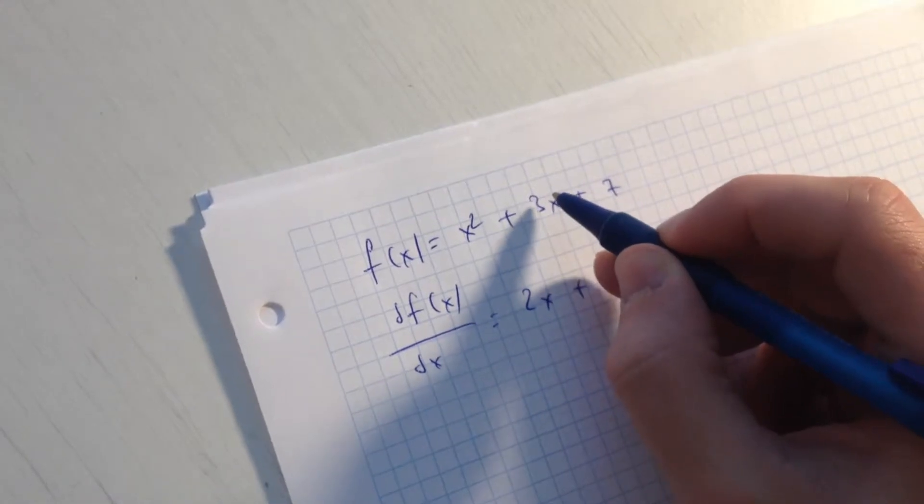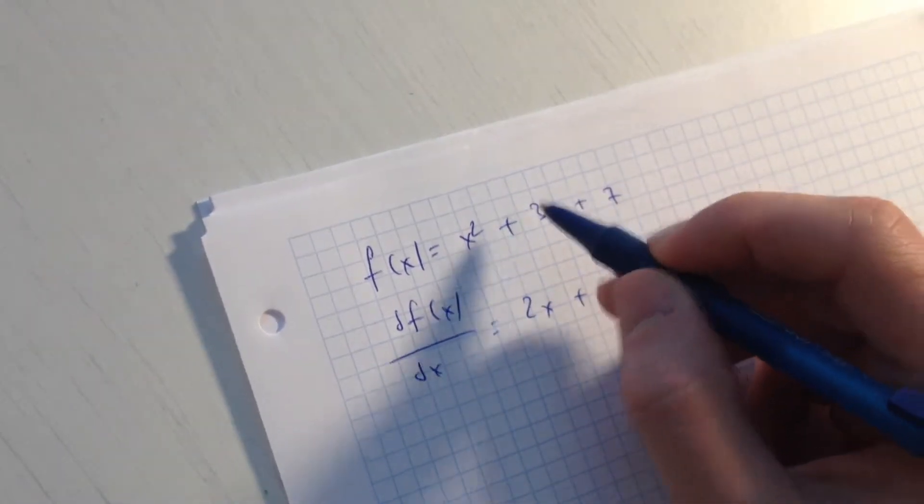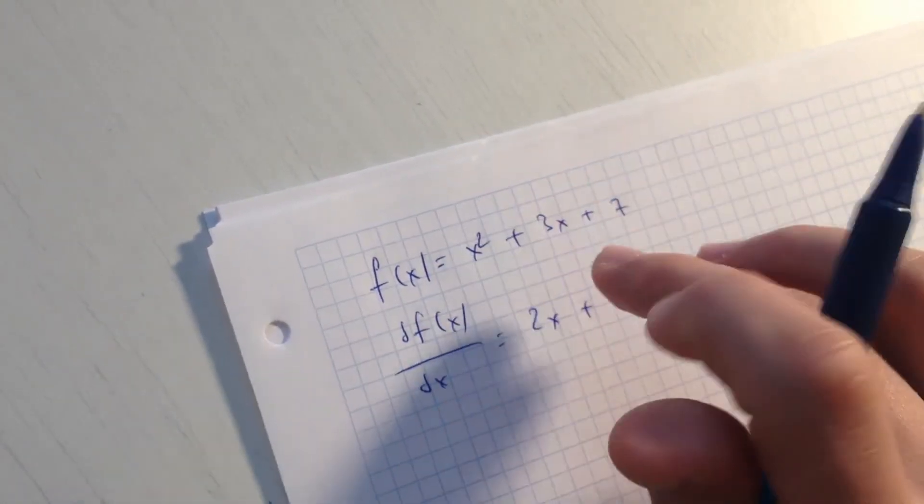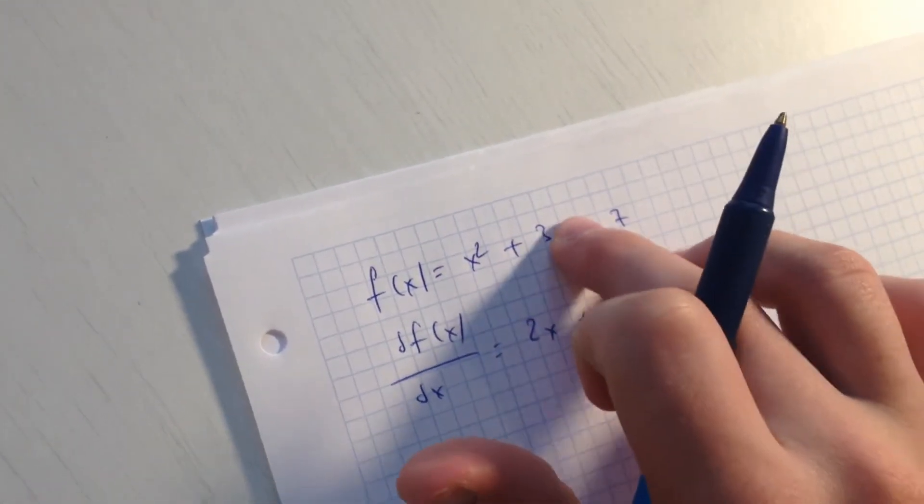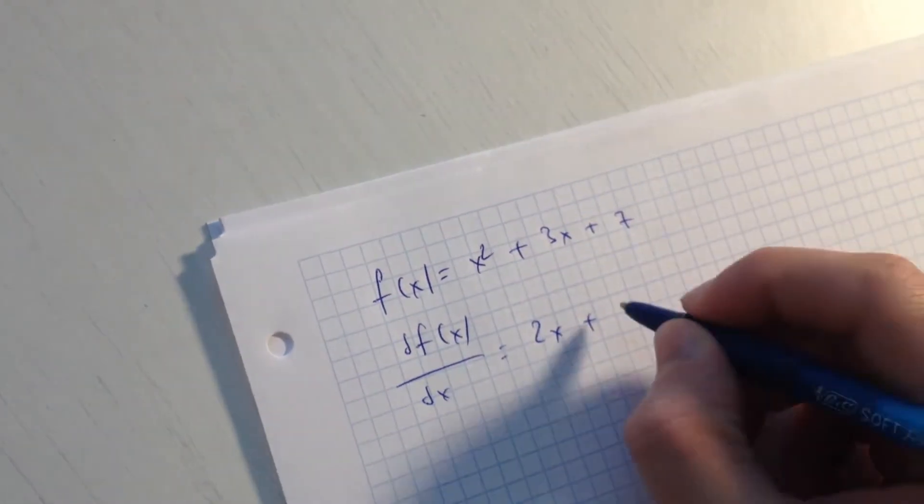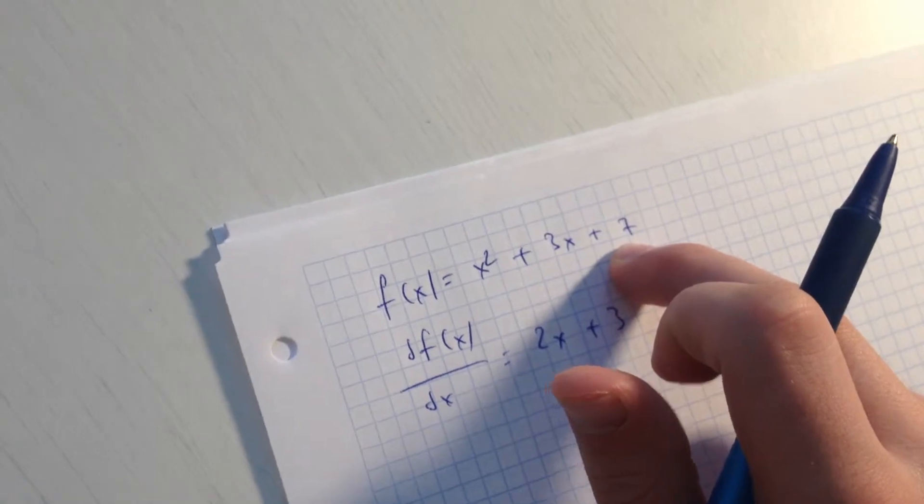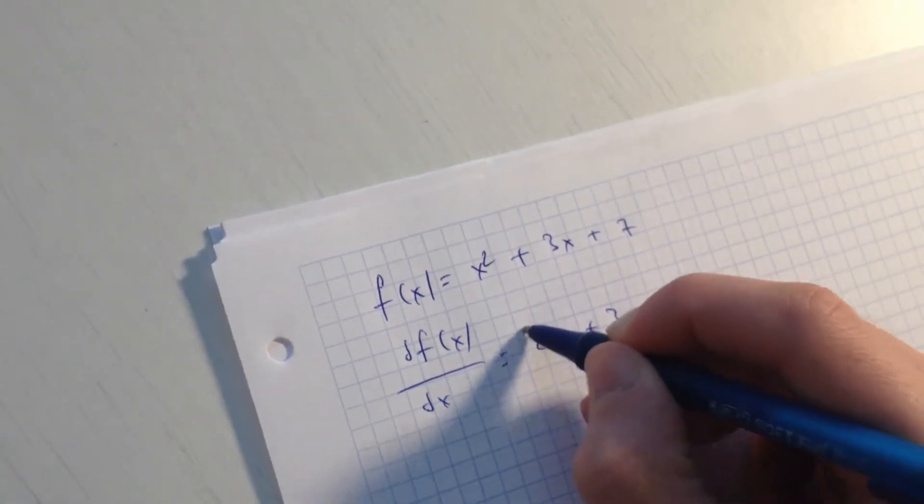doesn't have any squares, just 3 multiplied by x, x should be derived and it will be just 3. And each number when we derive it's going to be 0, so that's our solution. Another example: